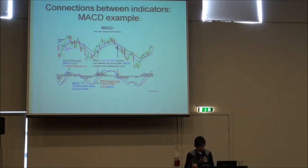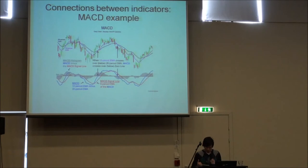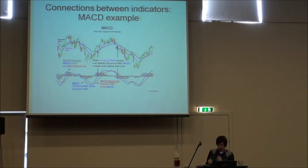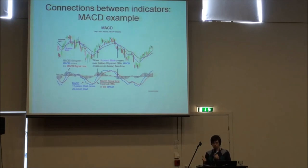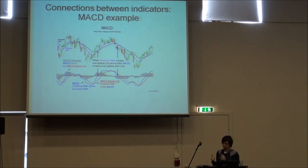The red line is the signal line. By analyzing the convergence and divergence of the blue and the red line, we can determine when to buy or sell shares, for example.